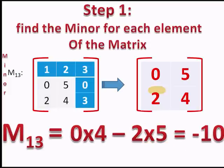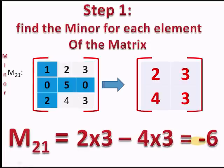The element A13 has minor M13. Leaving the first row and third column, the remaining elements are 0, 5, 2, and 4. Cross-multiplying: 0×4 minus 5×2 gives minus 10, so M13 is minus 10. Similarly, for element A21, which is 0, the minor M21 is minus 6.